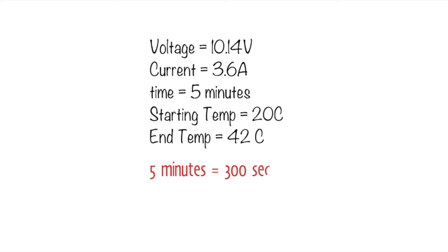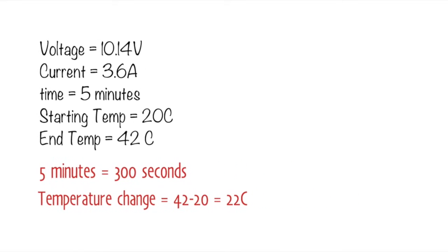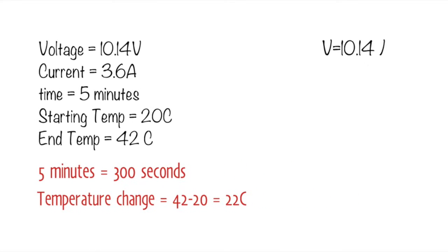You need to change the time into seconds, so five minutes becomes 300 seconds - that is five times 60 equals 300. And we need to look at the temperature change, so it started off at 20 degrees, ended up at 42 degrees, so 42 take away 20 gives you 22 degrees Celsius.